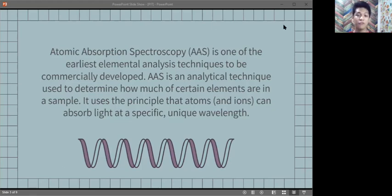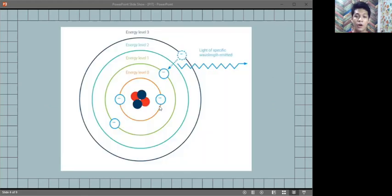The amount of light absorbed is measured and the concentration of elements in the sample can be calculated. When this specific wavelength of light is provided, the energy, or the light, is absorbed by the atom. Electrons in the atom move from the ground state to an excited state.